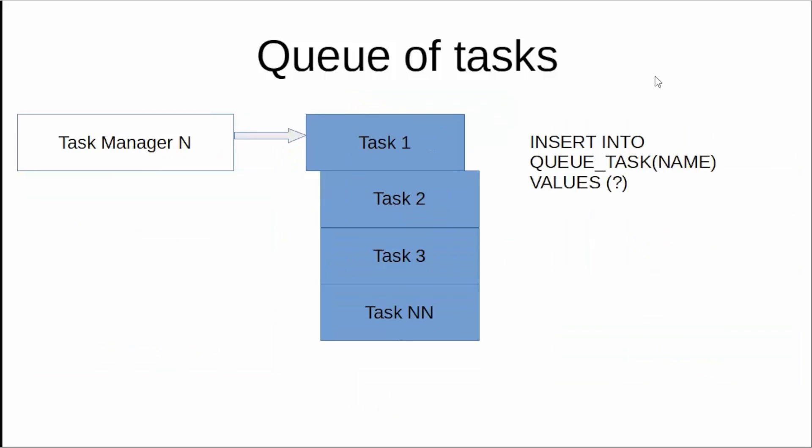To implement such a queue inside our database, we can use the following approach. We can create a table which will represent a queue of tasks. And to start a task, the task manager just needs to insert a record into this table.